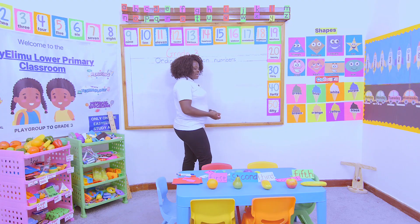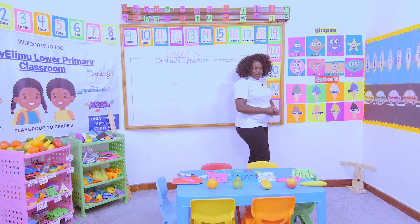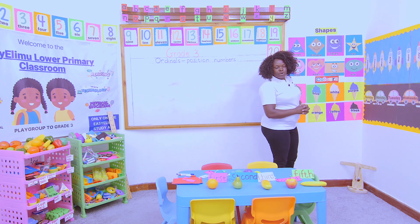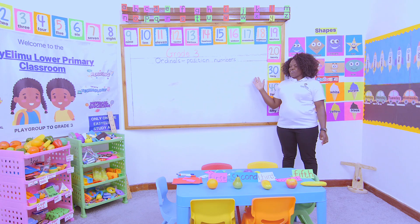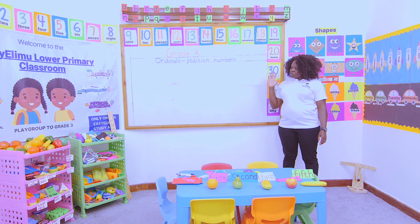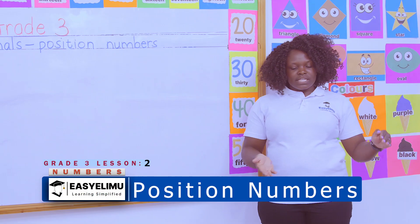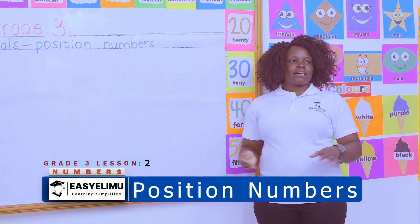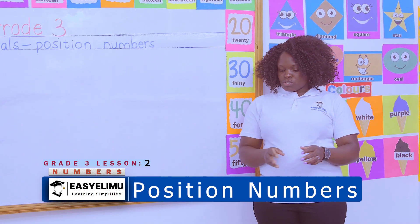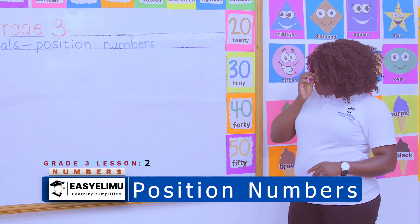We are still doing the ordinals. And we said, what are ordinals? We said ordinals help us to position or rank things. They help us to put things in the correct position. They help us to rank things according to the way they are supposed to be ranked. Are we together? So we are talking about ordinals.